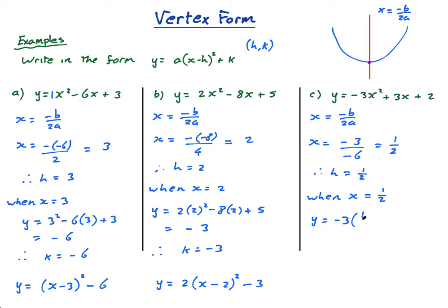When x equals 1 over 2, y equals negative 3 times 1 over 2 squared plus 3 times 1 over 2 plus 2. This is a half squared is a quarter, so that's negative 3 quarters plus 3 over 2 plus 2, which becomes negative 3 quarters plus 6 quarters. Negative 3 quarters plus 6 quarters gives me 3 quarters. 3 quarters plus 2 is 3 quarters plus 8 quarters, which is 11 quarters, or 11 over 4. Therefore k equals 11 over 4.